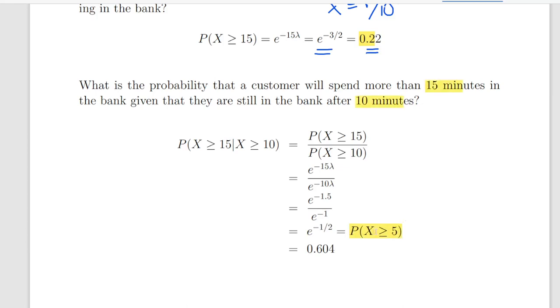This is the point of the memoryless property that it's the same as if you wait an extra 5 minutes. So, probability of x greater than or equal to 15, given that x is already greater than or equal to 10. Essentially, how we calculate that is a conditional probability, probability of x greater than or equal to 15, divided by the probability of x greater than or equal to 10.